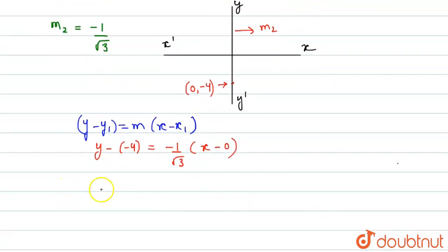Now, solving it further, we get y + 4 = (-1/√3)x. This implies √3y + 4√3 + x = 0. So, the required equation of the line is this.